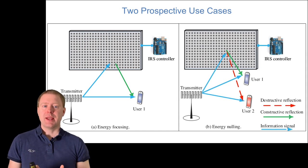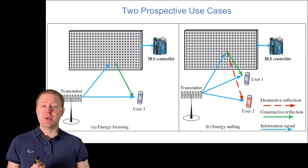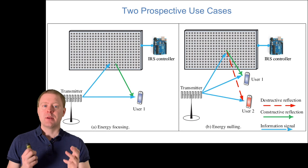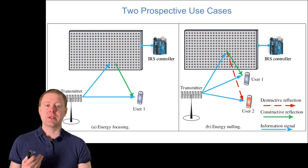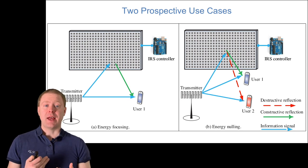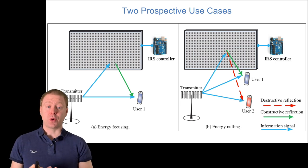The other option is energy nulling, where you're sending from a transmitter towards user 1, and it leaks to user 2. You put up an IRS and control it so the signal bouncing off creates destructive interference at user 2, so this user gets almost no signal gain, while at user 1 you get constructive interference and a stronger signal.